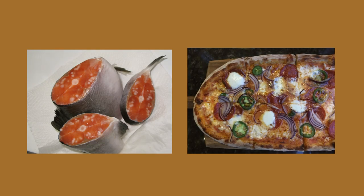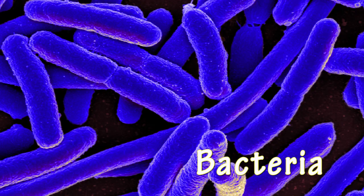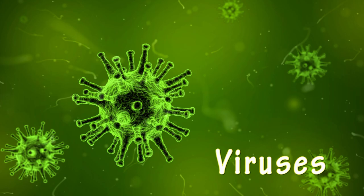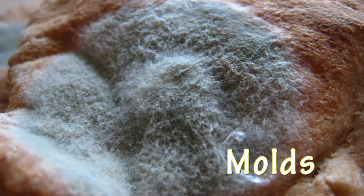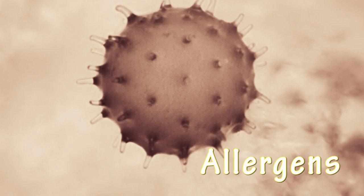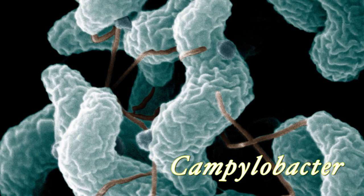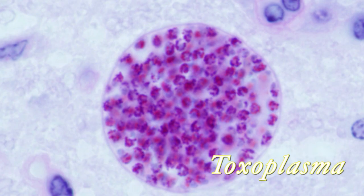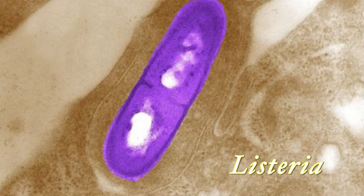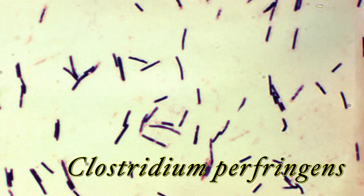There are a number of microbes that thrive on the food that we consume, and they are bacteria, viruses, molds, and allergens. They may range from well-known E. coli and Salmonella to the lesser known Campylobacter, Toxoplasma, Listeria, and C. perfringens.